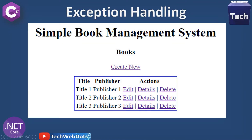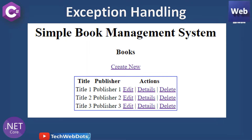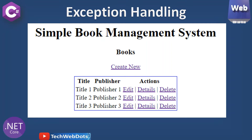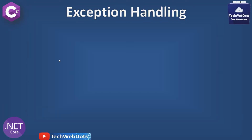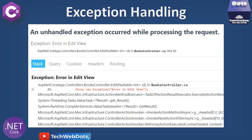This is the same application used in all previous sessions — a simple book management application from which we can create a new book, perform modifications, see details, and perform read actions. The main point is: what will happen if there's any unhandled exception at runtime? Most of the time we handle exceptions with try-catch-finally, but there must be a way to handle runtime issues globally.